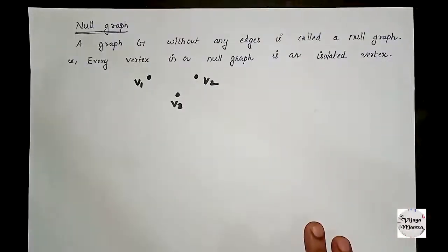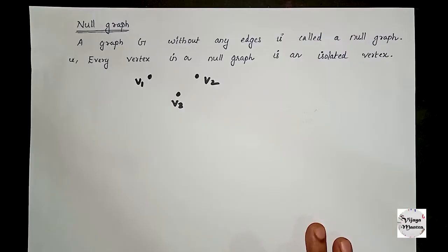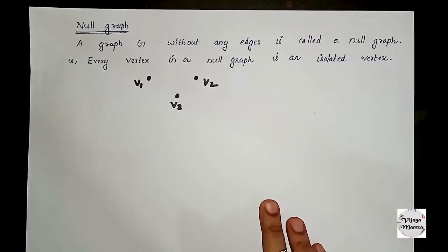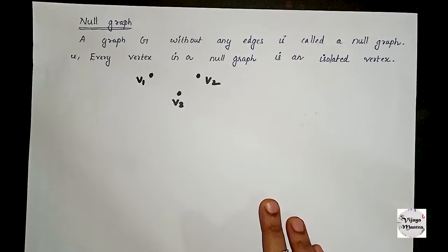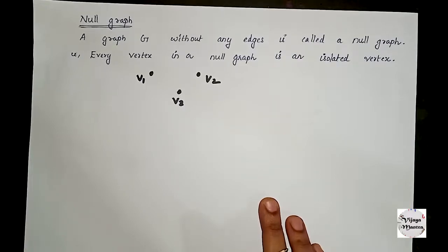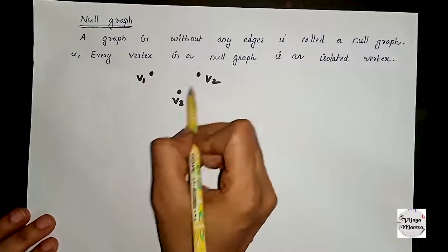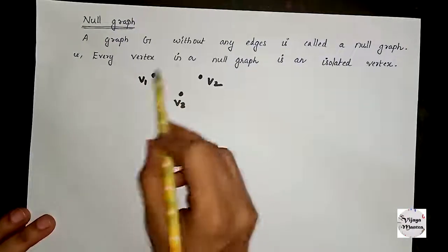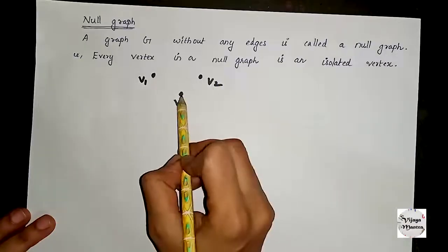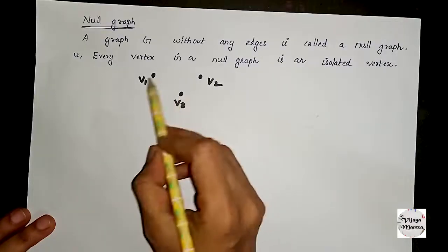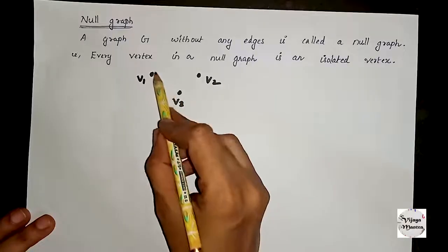The next type is the null graph. A graph G without any edges is called a null graph. Every vertex in a null graph is an isolated vertex. For example, the graph with vertices V1, V2, V3 and no edges is a null graph — all vertices are isolated.